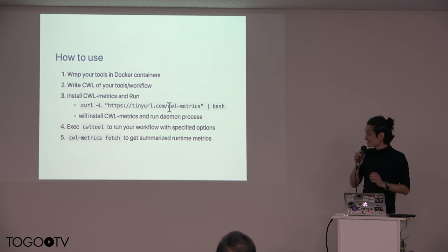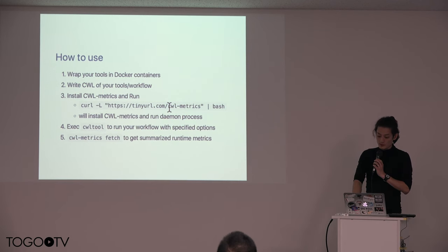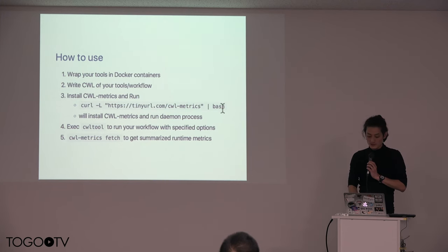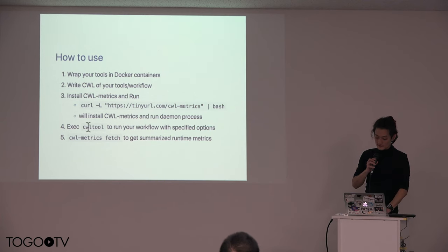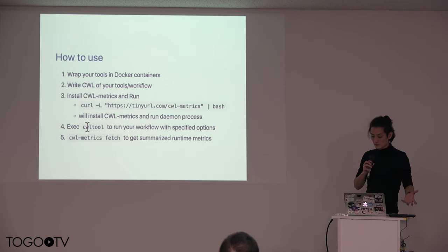It is very easy to use. You need to wrap your tools in Docker containers — CWL also supports tool execution without containers, but this tool requires Docker containers. Then you need to write the CWL for your workload, and install CWL metrics by just running a curl command. This will fetch the script, run it on bash, automatically fetch all the resources you need, and start automatically as a daemon process. After that, you execute the reference implementation of CWL called CWL tool to run your workload, and it automatically collects runtime metrics in the database.